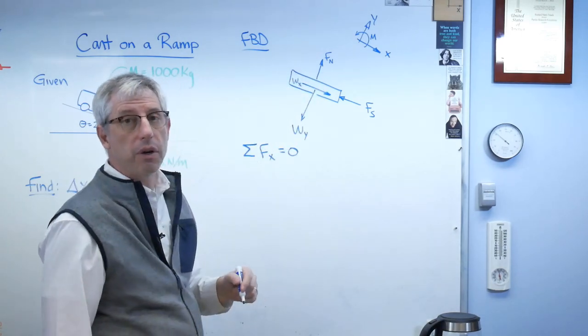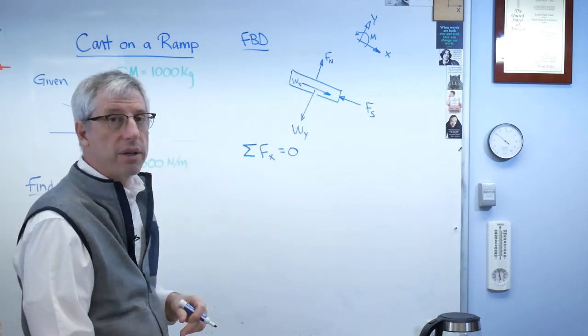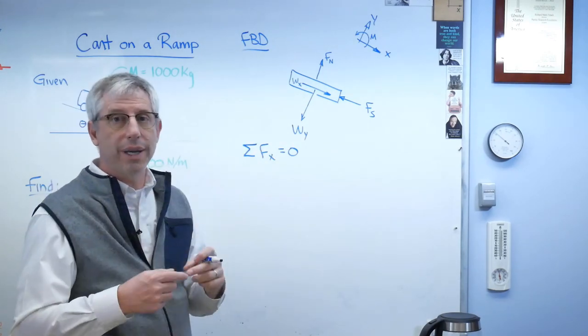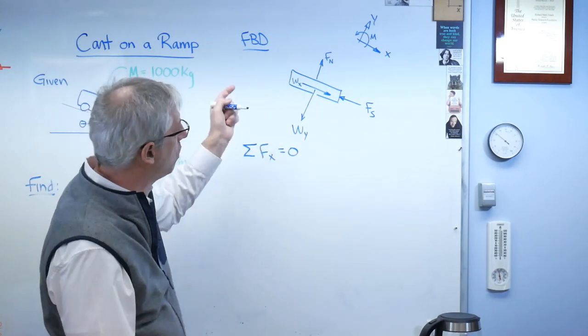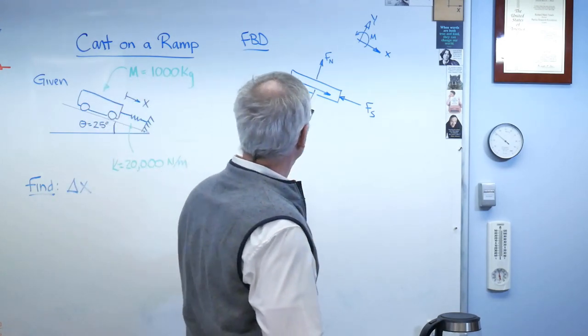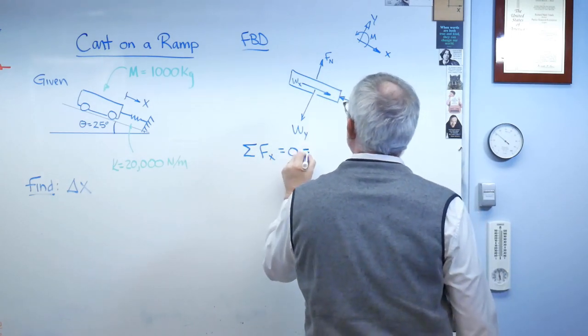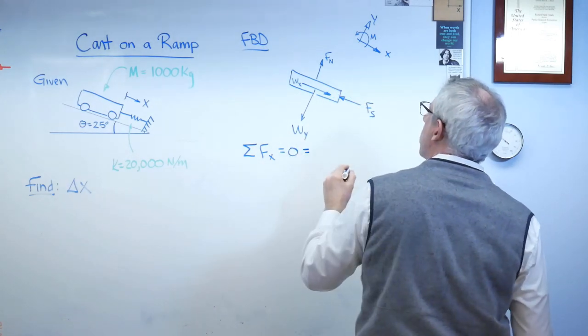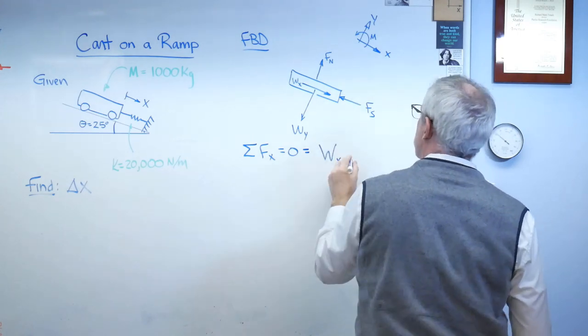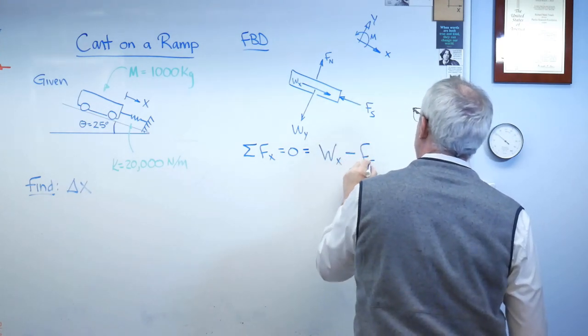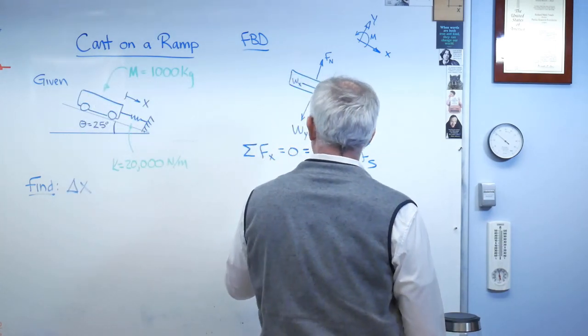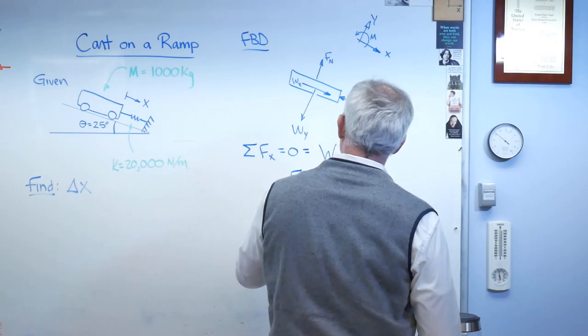Notice there's no sum of the moments here either. That's because we're treating the cart as a body that doesn't rotate. This is the only equation we need. Let's go ahead and just do what the free body diagram says to do. w x is going in the positive direction. And the spring force is going in the negative direction. That means the spring force is w x.